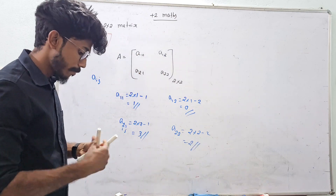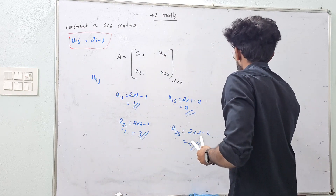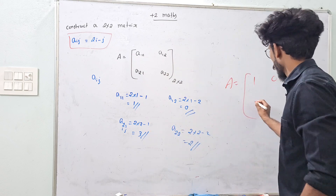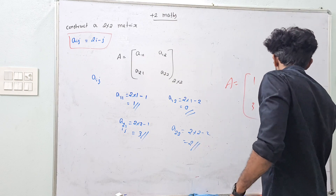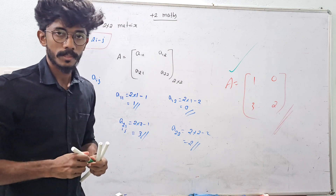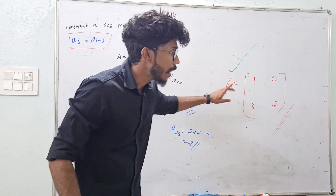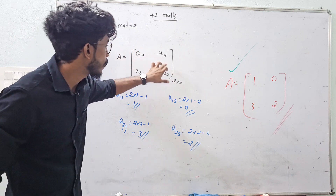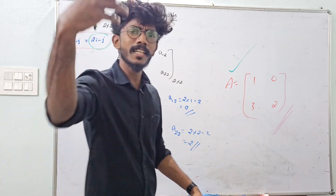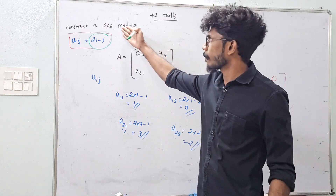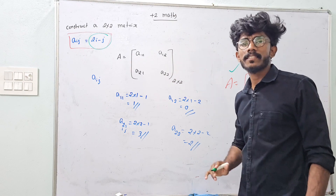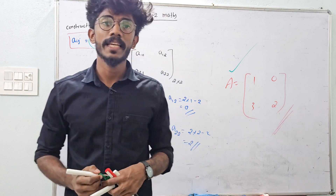So our matrix: A(1,1) is 1, A(1,2) is 0, A(2,1) is 3, A(2,2) is 2. This is the answer. When the question comes as a 2x2 matrix, we apply this equation. Because this equation can always solve the problem — whether it's 2x2, 3x3, 3x2, or 4x2.